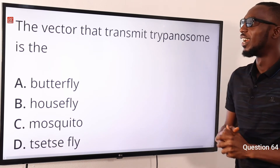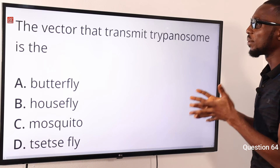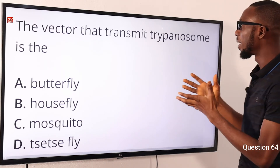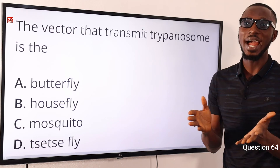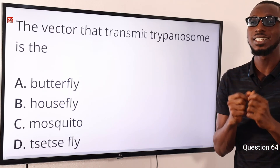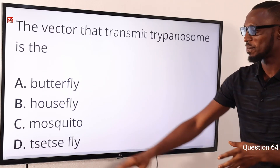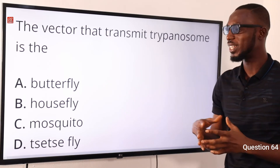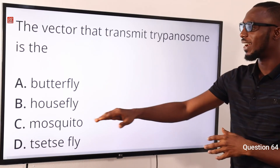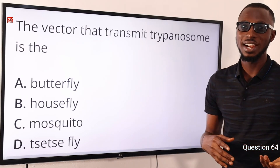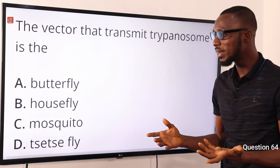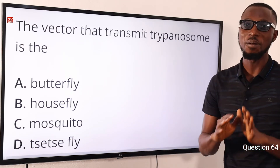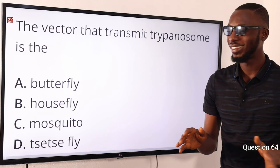Question 64: the vector that transmits trypanosomiasis is what? Trypanosomiasis is transmitted through the bite of an infected tsetse fly. Butterflies are pollinators, houseflies are associated with cholera and amoebic dysentery, and mosquitoes are known for malaria. So the correct option is option D for tsetse fly.